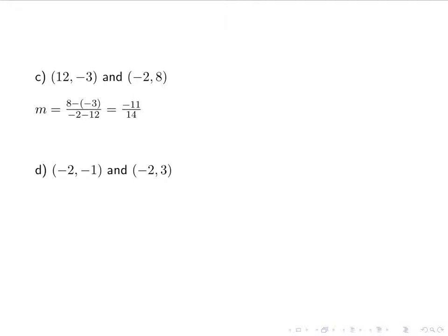And then negative 2, negative 1, and negative 2, 3. M is 3 minus negative 1 over negative 2 minus negative 2. That's 4 over 0, which is undefined. Remember, you cannot divide by 0. 0 can be on the top, it cannot be on the bottom.